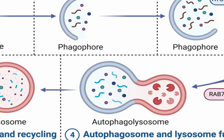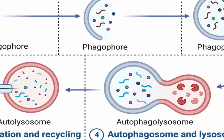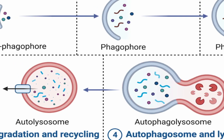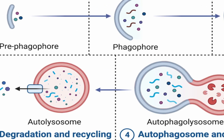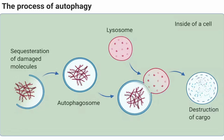Upon fusion with the lysosome, the cargo within the autolysosome is subjected to enzymatic degradation by lysosomal hydrolases, resulting in the breakdown of cellular components into their constituent molecules. After degradation, the breakdown products such as amino acids, fatty acids and sugars are released into the cytoplasm and made available for cellular processes such as energy production or biosynthesis.